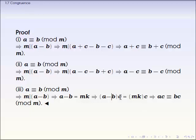Then let's arrange it a little bit. This one is ac minus bc equals m times kc.